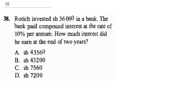The next question says Rotich invested 36,000 shillings in a bank. The bank paid compound interest at a rate of 10% per annum. How much interest did he earn at the end of two years? To solve this compound interest question, you know that interest is PTR over 100 - that's simple interest, but we're going to compound it. For the first year, it's 36,000 multiplied by 1 for time, multiplied by 10 for rate, all over 100.